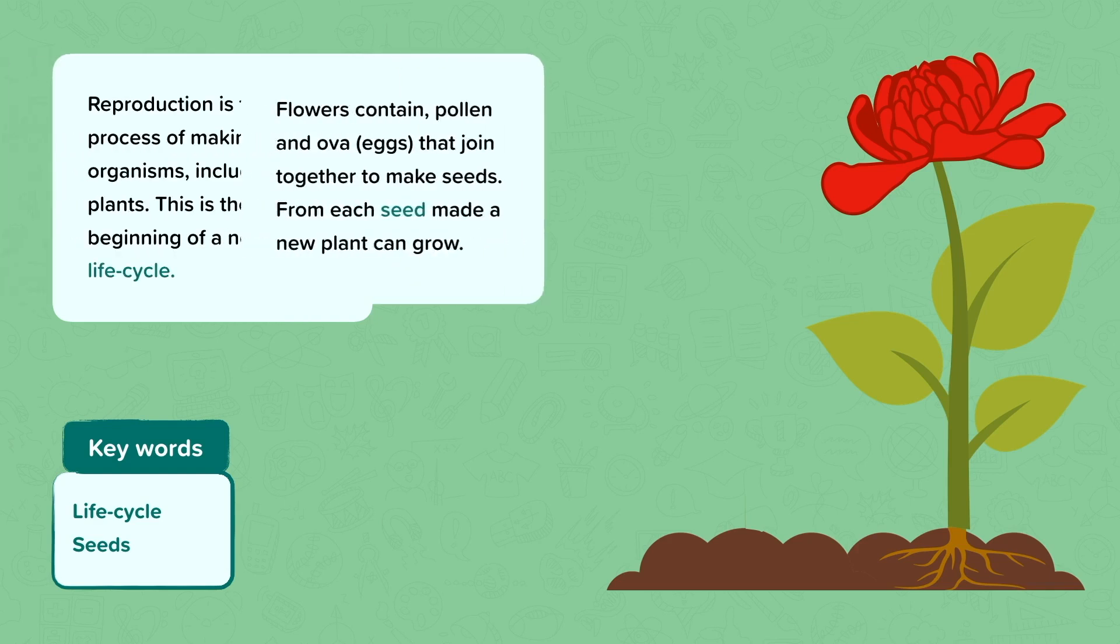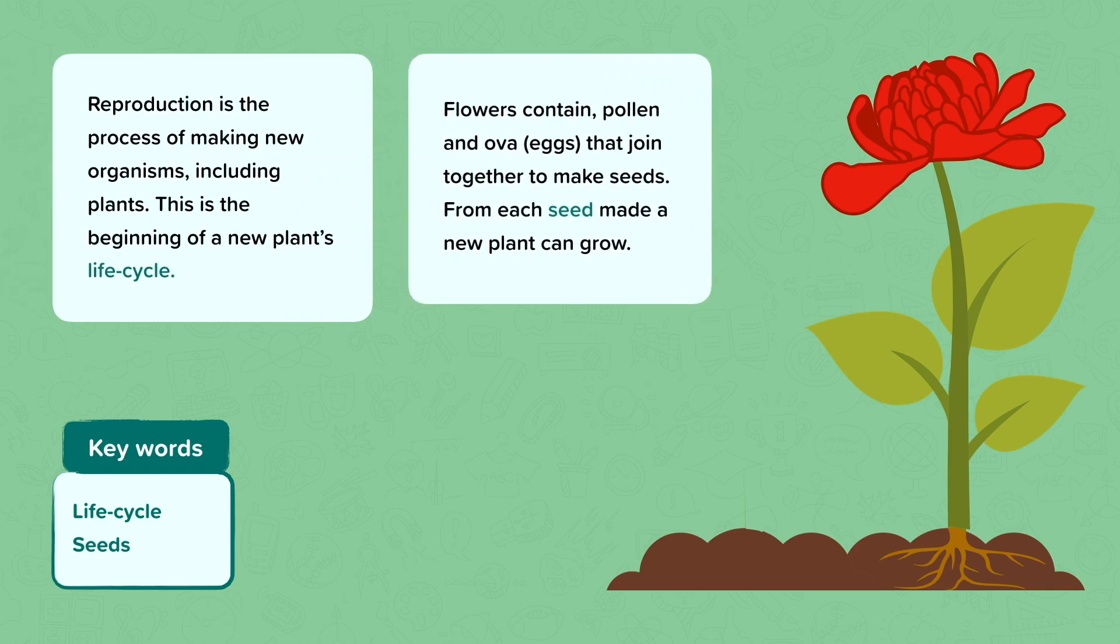Flowers contain pollen and eggs, and these join together to make seeds in fertilisation. From each seed, a new plant can grow. So we need to understand how the seed is made and what happens after it is made.